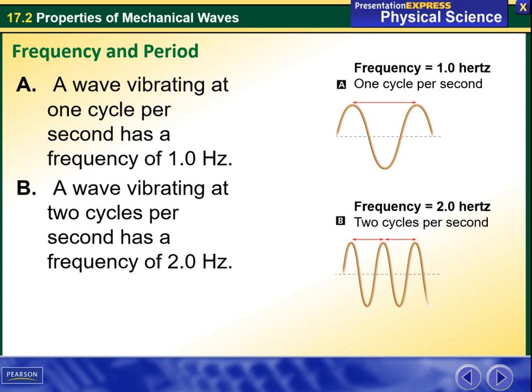So for example, this figure right here, which is figure A, we have frequency 1 hertz. A wave vibrating at 1 cycle per second has a frequency of 1 hertz. While here, picture B, a wave vibrating at 2 cycles per second has a frequency of 2 hertz. So you can see here that those are two waves and this is here one wave.